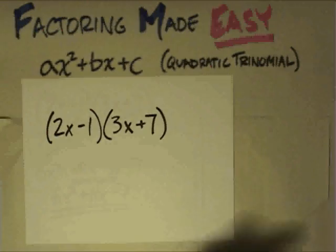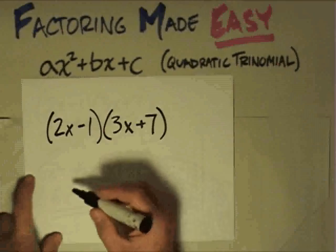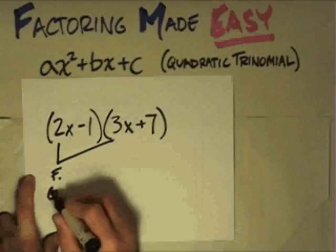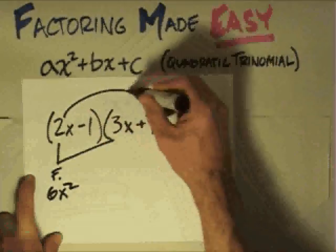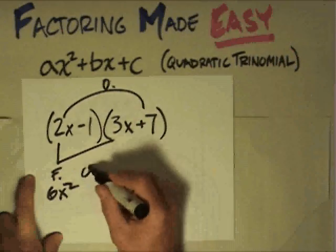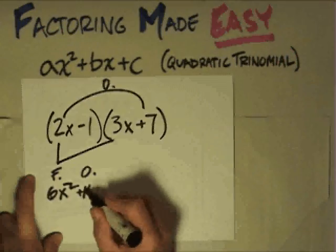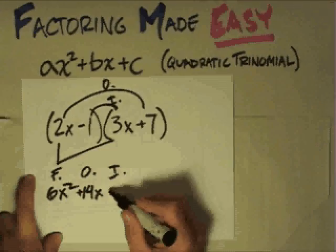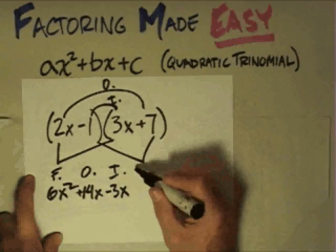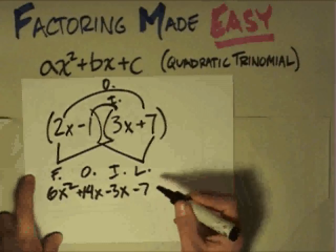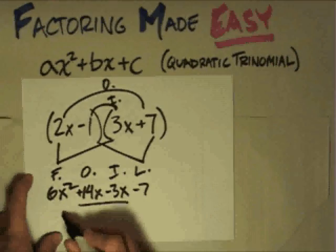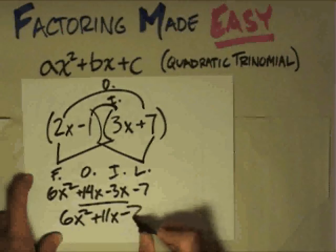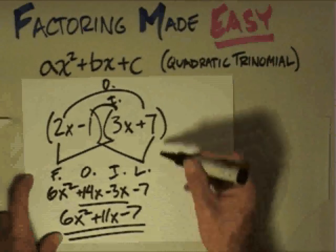Consider something like this — hopefully you've done this before and you can fast forward if this is simple for you. To multiply these, I'm gonna do the first terms, and multiplying those gives me 6x squared. Then I do the outside terms — that's the O in FOIL — and that gives me plus 14x. Then the inside terms give me minus 3x, and the last terms give me minus 7. Combining the middle ones gives 6x squared plus 11x minus 7. That is multiplying or foiling them out.